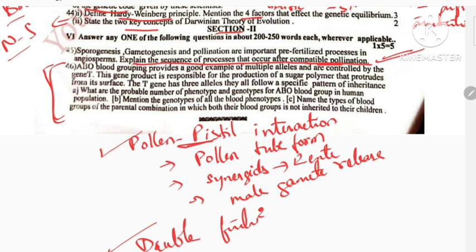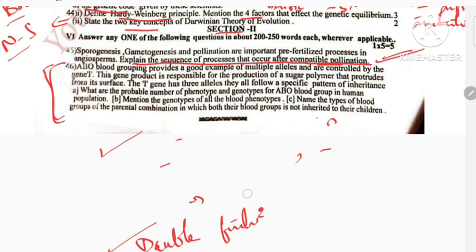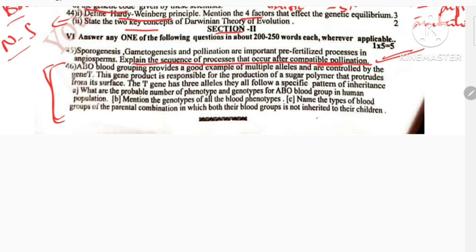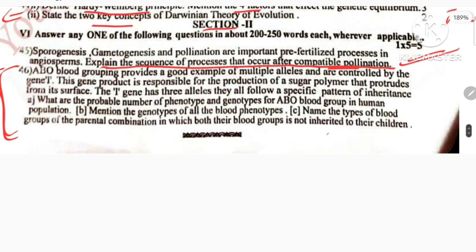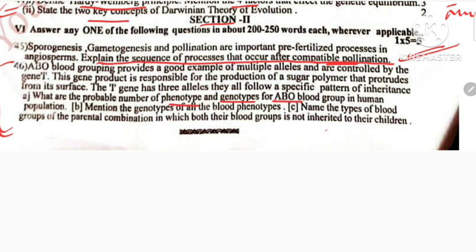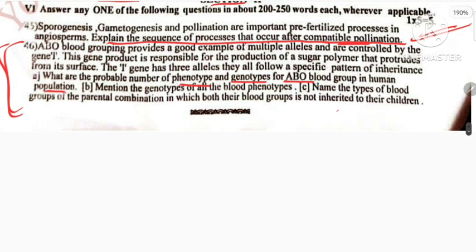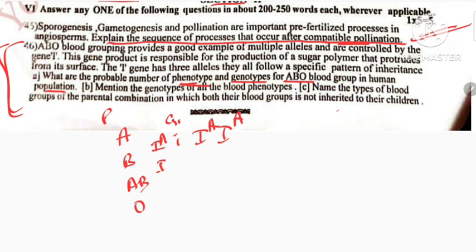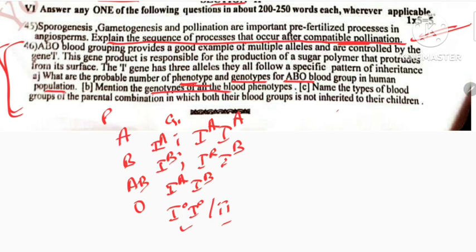This blood group question is very interesting — students are looking at this tough question. Probable phenotypes and genotypes of ABO blood group in human population. The phenotypes are A, B, AB, and O. Genotypes are: IA IA, IA i for blood group A; IB IB, IB i for blood group B; IA IB for blood group AB; and ii for blood group O. These are the genotypes of all blood phenotypes.